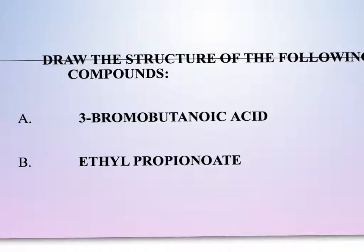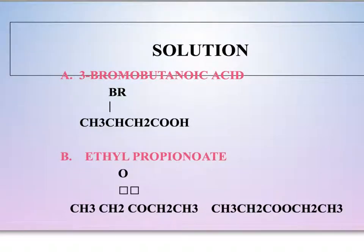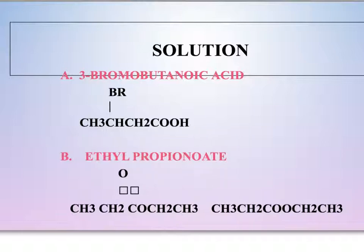Sometimes we are asked to name an ester, and other times we are asked to draw the structure of an ester from a name. Here I have two examples for you to practice with: 3-bromobutanoic acid and ethyl propanoate. Hit pause and see if you can draw these out — answers are on the next slide. The first was a carboxylic acid from a previous video, but carboxylic acids and esters are tied very closely together: an alcohol plus a carboxylic acid makes an ester. The IUPAC name for ethyl propanoate is ethyl propanoate.